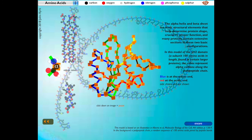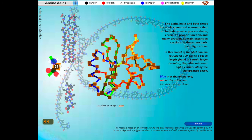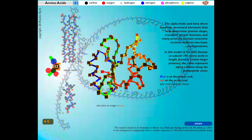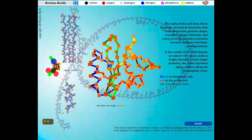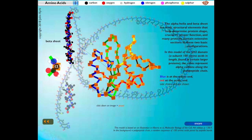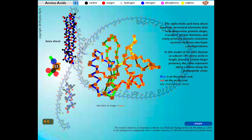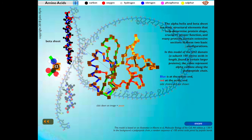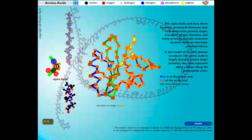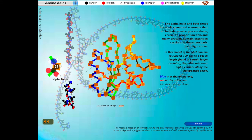In this model of the SH2 domain, a subunit 100 amino acids in length found on certain larger proteins, the cubes represent alpha carbons along the peptide chain. Blue is at the amino end and red at the acid end. Side chains are not shown here. Part of the structure is a beta sheet embedded inside the complex. Part of the structure is an alpha helix.